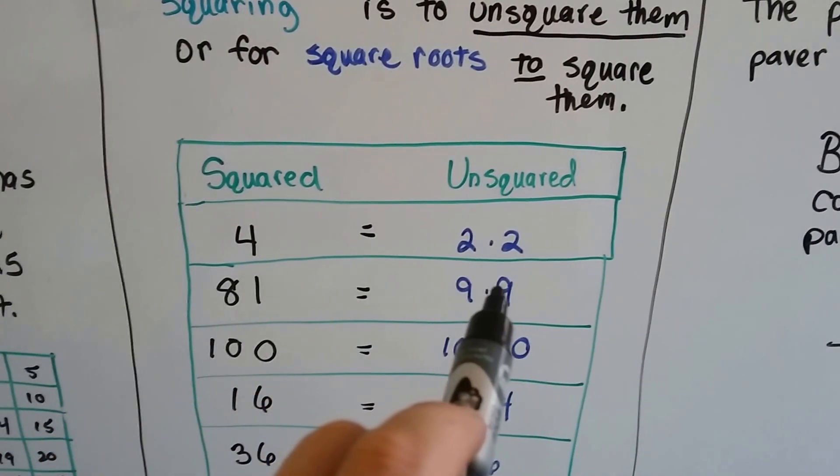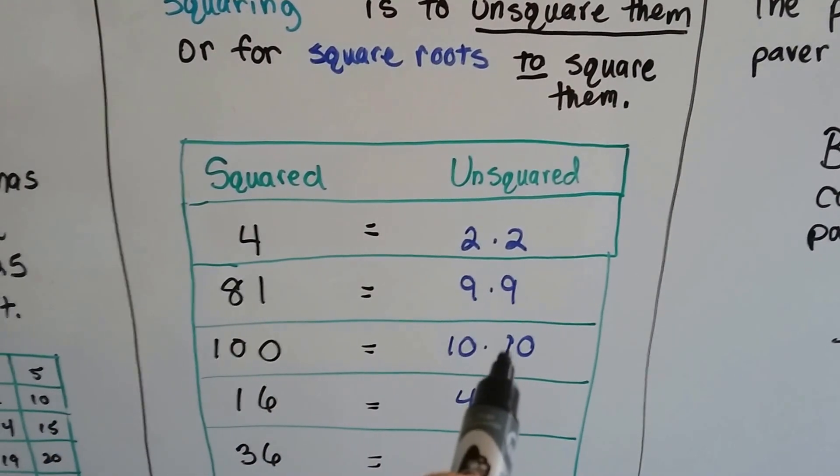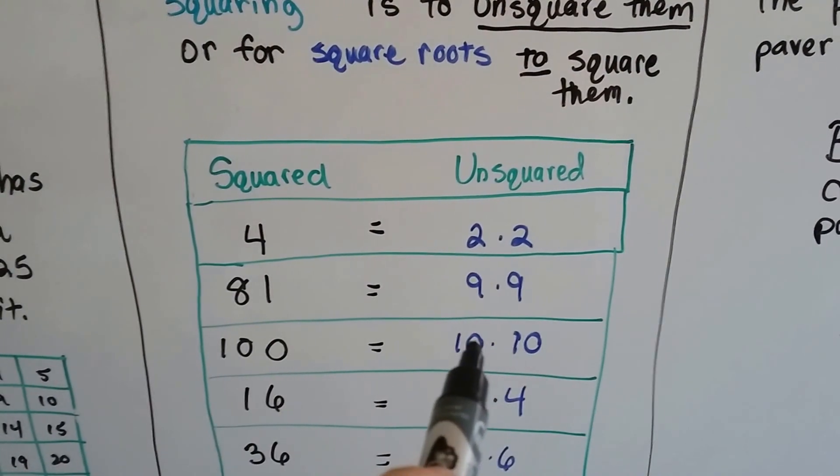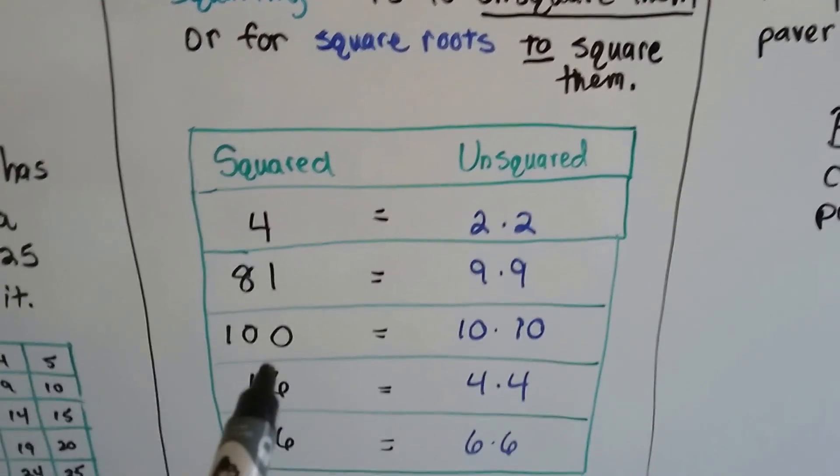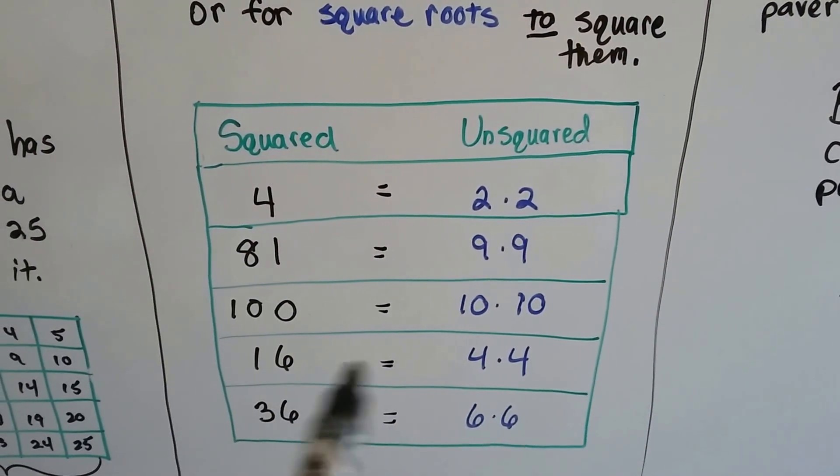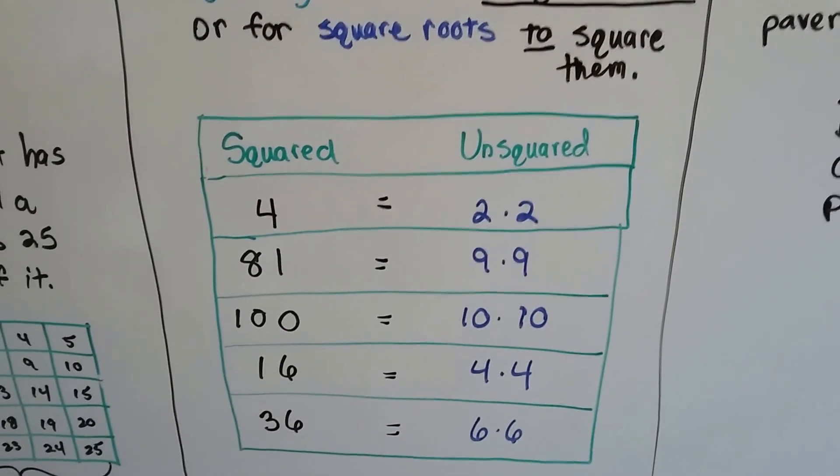If you had 81, you could do 9 times 9. The inverse operation for a 10 times 10 squared would be 100. 6 times 6 is 36.